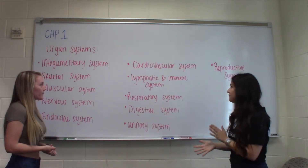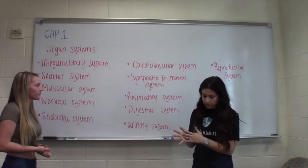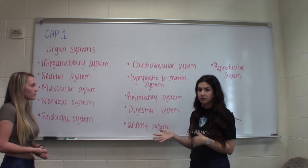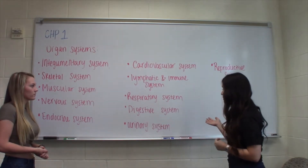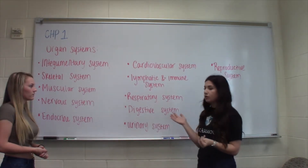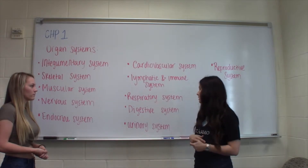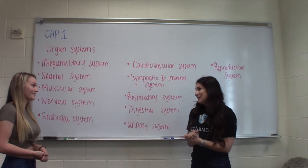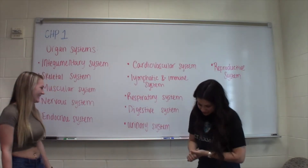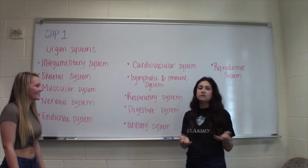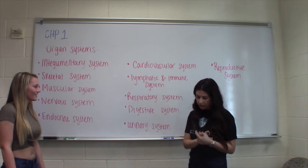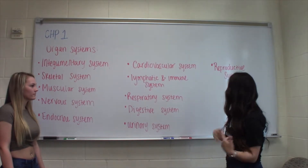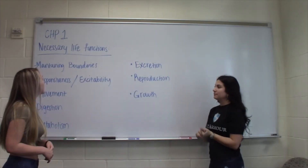The lymphatic and immune system: the lymphatic houses the immune system, and the immune system fights off foreign invaders. Your respiratory system helps you breathe — it's the exchange of respiratory gases. Your digestive system digests your food, absorbs and breaks down nutrients. Your urinary system removes waste, and the reproductive system is where you make babies.